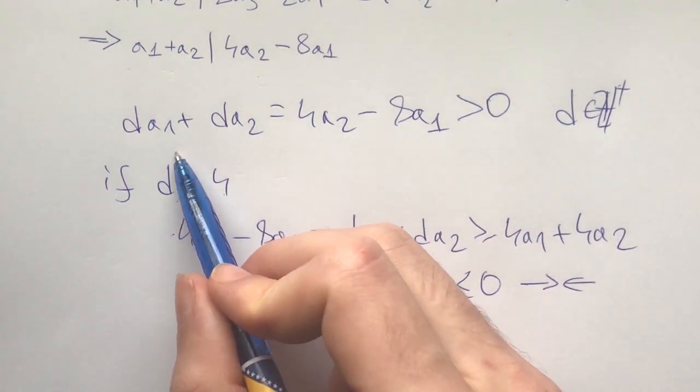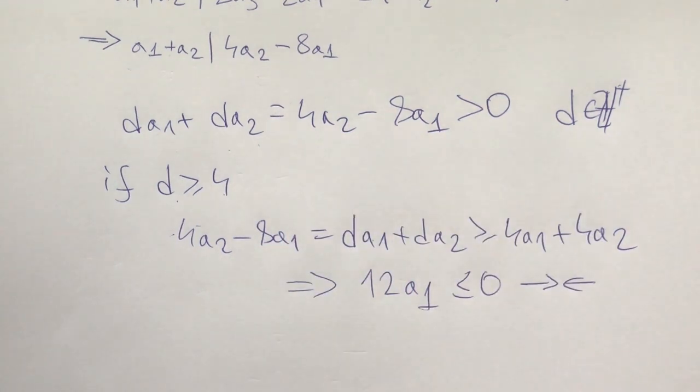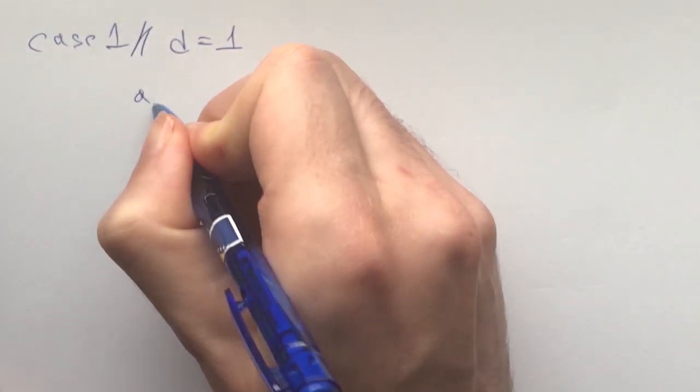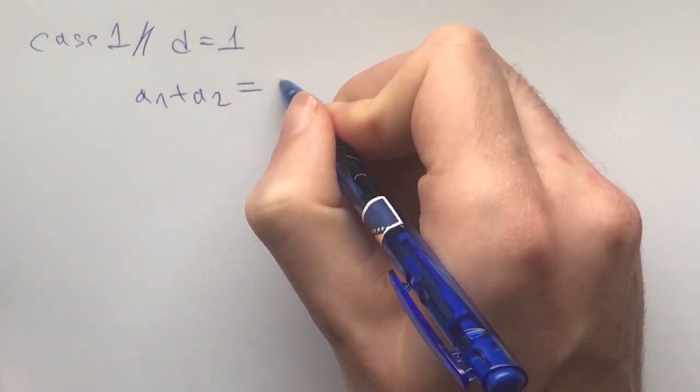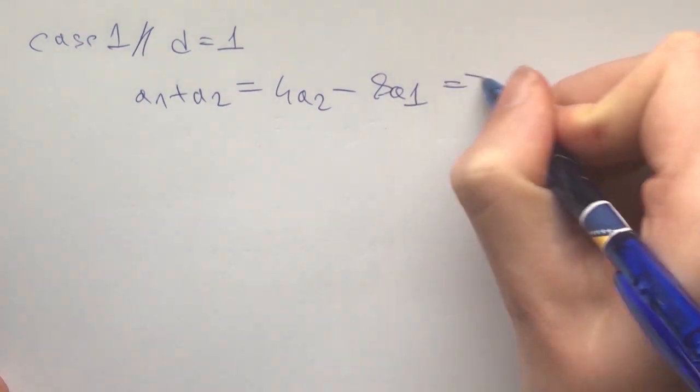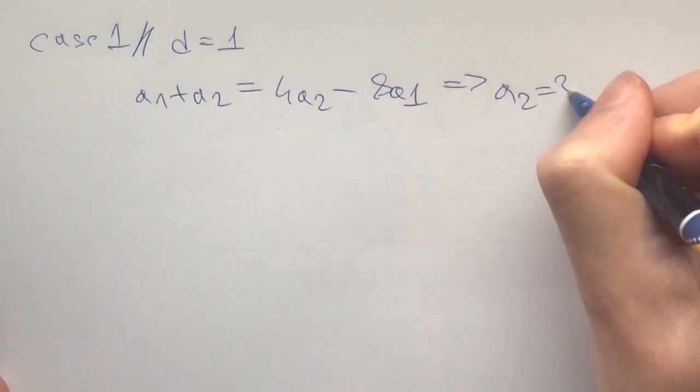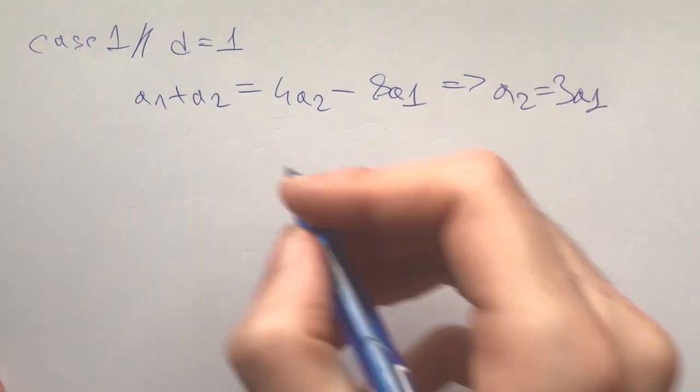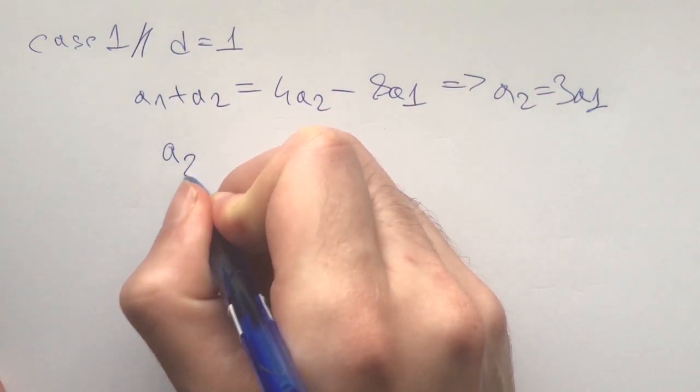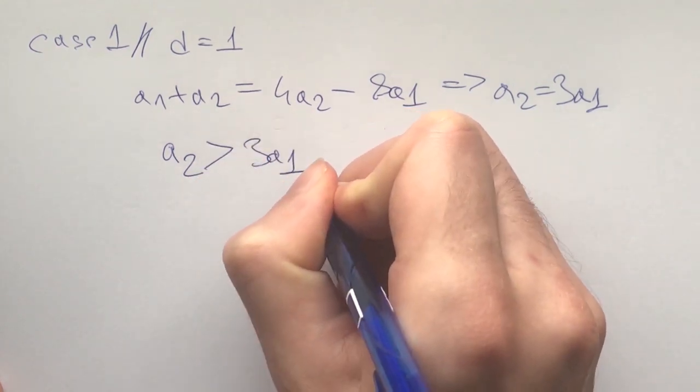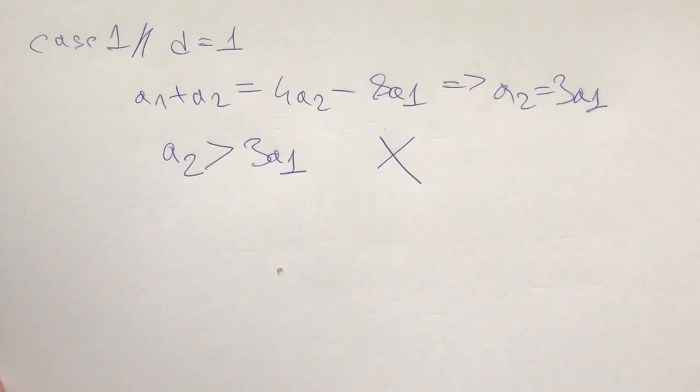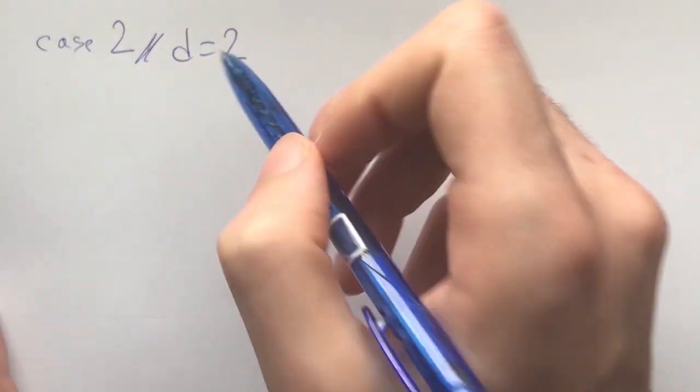Now we're left with three cases: d equals 1, 2, and 3. Let's do them. Case 1: d is 1. The condition rewrites as a1 + a2 = 4a2 - 8a1, which gives us a2 = 3a1. Now this would almost be a solution, but we have a condition that a2 needs to be greater than 3a1, so this case does not give us a solution.